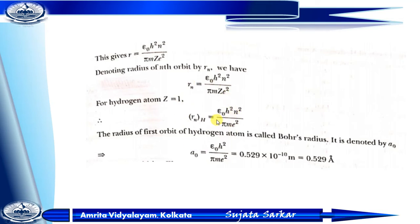The radius of the first orbit of hydrogen atom is called the Bohr radius, denoted by a₀. It equals ε₀h²/(πme²), which is approximately 0.529 Ångströms.